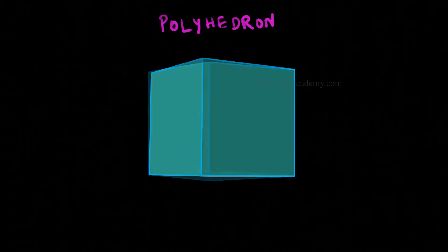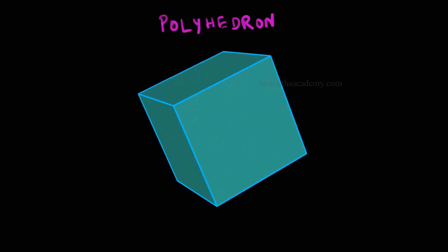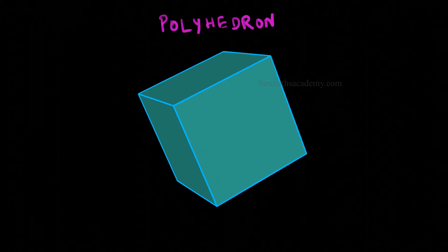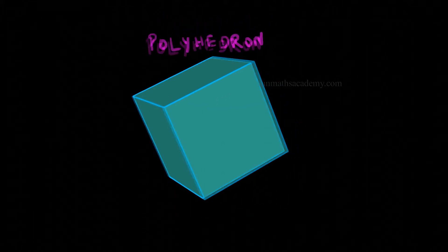From this, we understand that a polyhedron is a solid shape made of flat faces. Not just that, every face of the polyhedron is also a polygon.